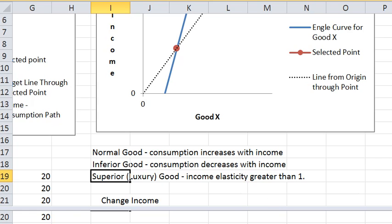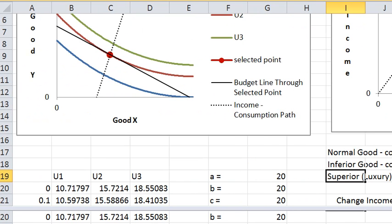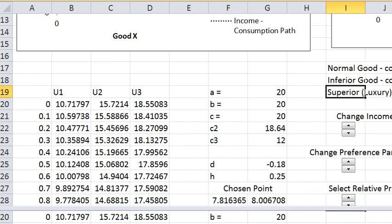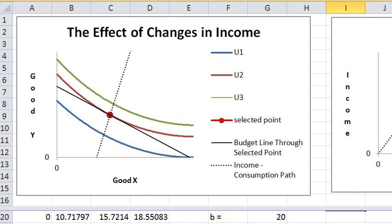The income elasticity is greater than one. Okay, so let's go back here and now let's see if we can illustrate what an inferior good looks like in this picture.